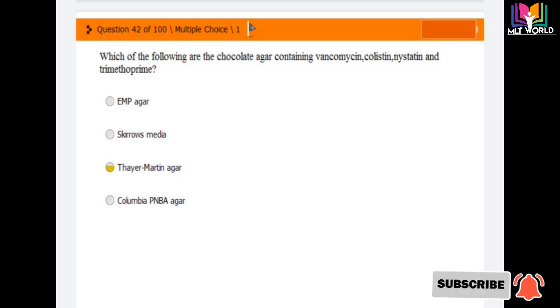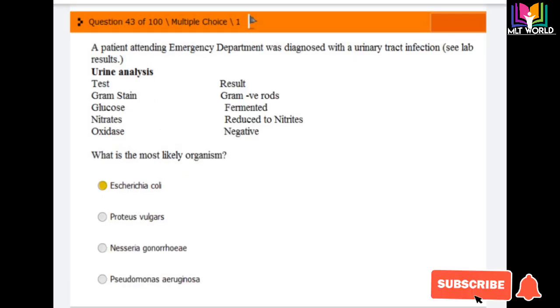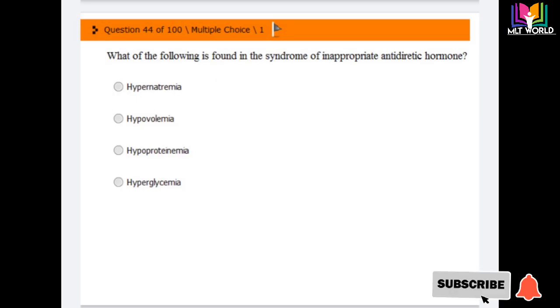Question number 43: A patient attending the emergency department was diagnosed with urinary tract infection. Lab results show: Gram stain positive for gram-negative rod, glucose fermented, nitrate reduced to nitrite, and oxidase negative. Which organism is suspected? Options are Escherichia coli, Proteus vulgaris, Neisseria gonorrhoeae, Pseudomonas aeruginosa. The answer is Escherichia coli. When gram-negative, glucose fermented, nitrate reduced to nitrite, and oxidase negative, Escherichia coli is the organism expected in urinary tract infection.